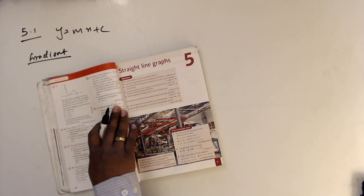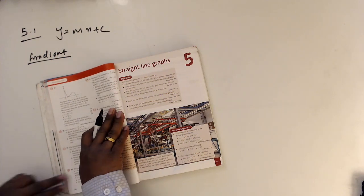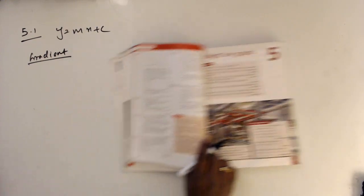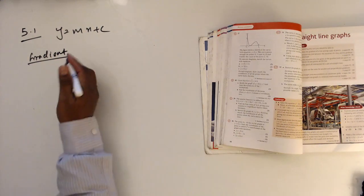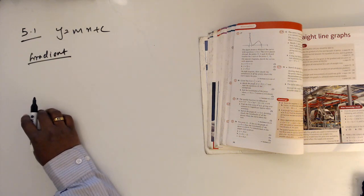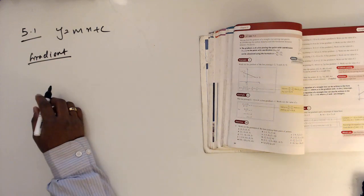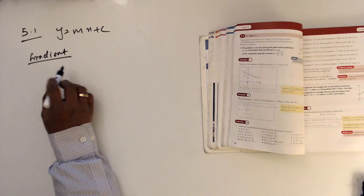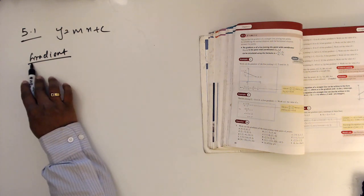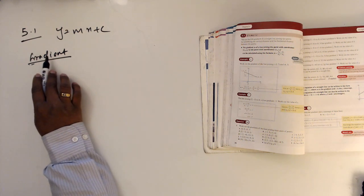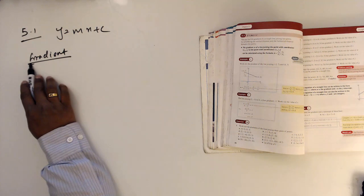Chapter 5 — we will start Chapter 5: straight lines and graphs. Section 5.5, y = mx + c. Under this topic we have to discuss initially what is gradient.